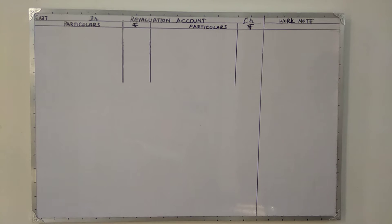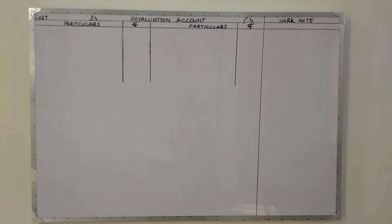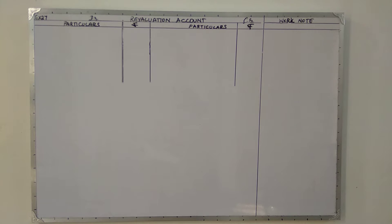Welcome to accountancy class. We are going to do exercise number 27 in unit 5 - Admission of a Partner, given on page number 180. There are two partners, Angu and Shankar, who share the profit and loss in the ratio 3:2.